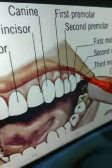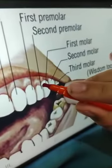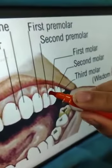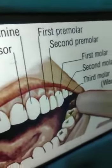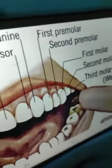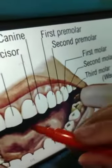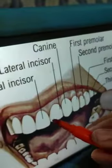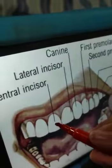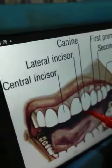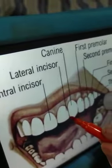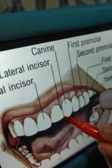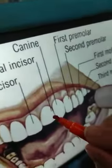This first molar is here. And the second molar. This is the central incisor. And this is the lateral incisor.